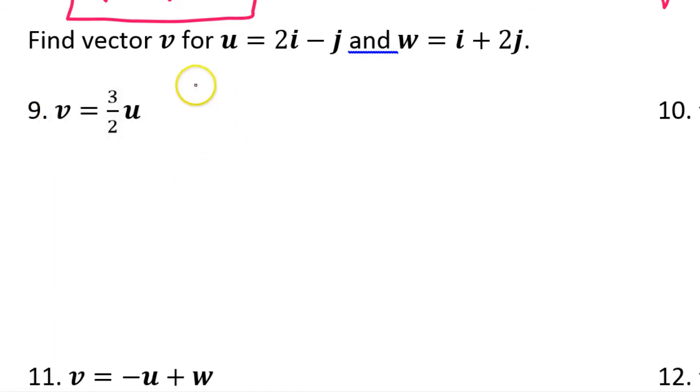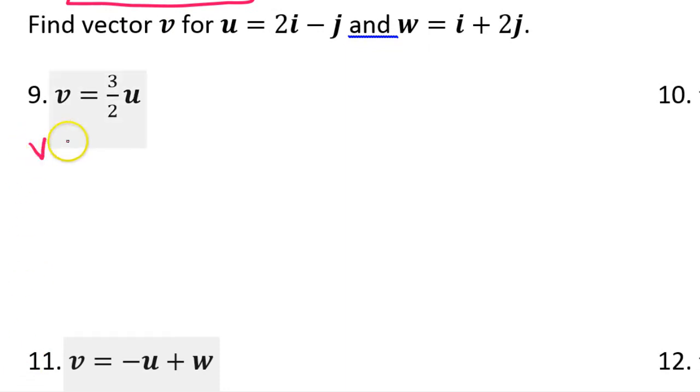For number 9, we are given vector u is 2i minus j, and vector w is i plus 2j. Given that, we are supposed to find vector v. Since vector v is 3 halves of vector u, let's just set that up. We have 3 halves times 2i minus j. If we do the distributive property, this will give us 3i minus 3 halves j.